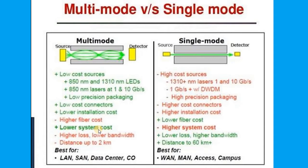The entire system cost is less for multi-mode and higher for single mode. Multi-mode has higher loss, lower bandwidth, and can be used for distances up to 2 kilometers. Single mode has lower loss, higher bandwidth, and can be used for distances up to 60+ kilometers. Multi-mode transmission is best for local area networks, SANs, and data centers, while single mode is used for wide area networks and campuses.